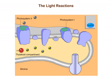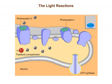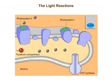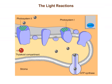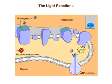The buildup of hydrogen ions inside the thylakoid compartment stores potential energy. This energy is harvested by an enzyme called ATP synthase. As hydrogen ions diffuse through ATP synthase down their concentration gradient, the enzyme uses the energy of the moving ions to make ATP.